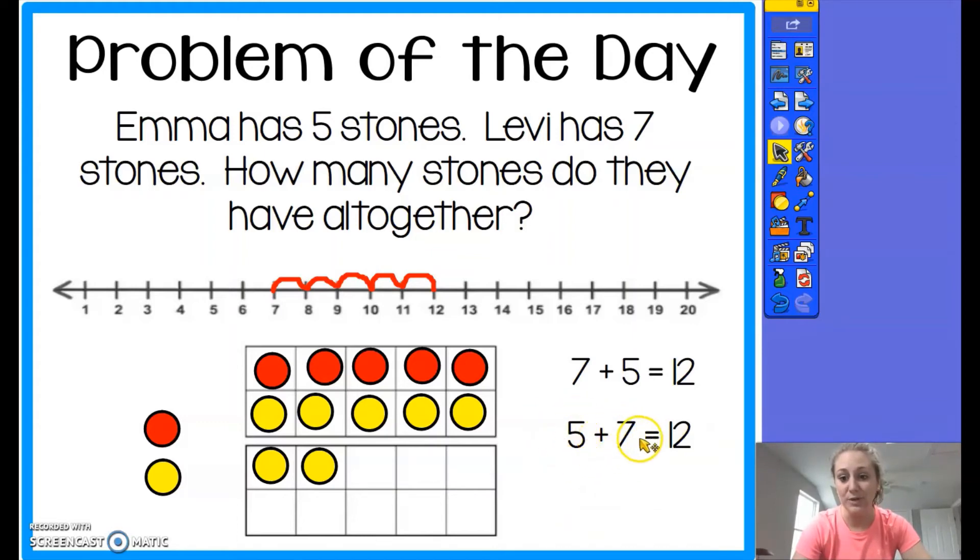We would read it as Emma had five stones and Levi had seven more stones, which is the same as twelve stones altogether. But many of you may have also saw a different equation through looking at the twenty frame.